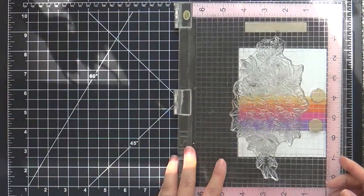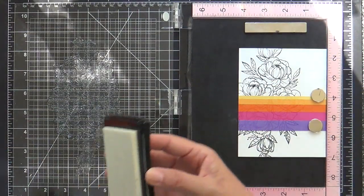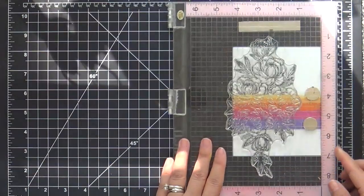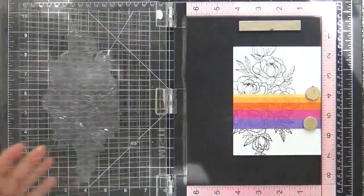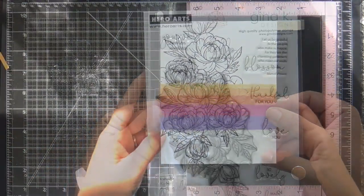But this time instead of stamping it in black ink, I'm using VersaMark ink. So it's going to give it a different look, almost like an illusion. It's like magical. I really love how it turns out. It's there, but it's like not. I don't even know what to say.